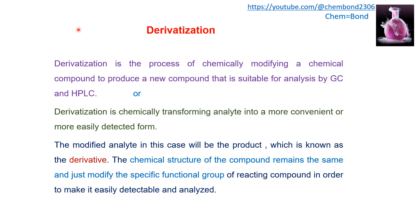Derivatization in gas chromatography. While analyzing a compound through GC and HPLC, if the compound is more polar or less volatile, it will cause problems during analysis. For this purpose, we will derivatize the sample or analyte. Derivatization is the process of chemically modifying a chemical compound to produce a new compound that is suitable for analysis by GC or HPLC.